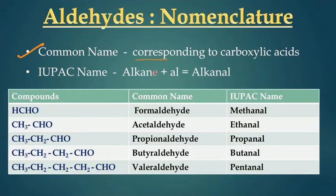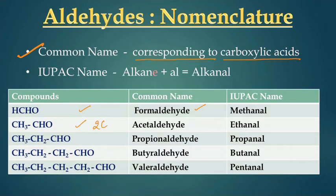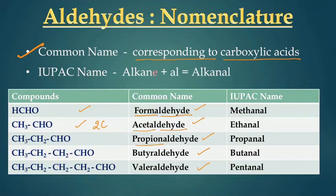Now for the common nomenclature system: the common names of aldehydes are written according to their corresponding carboxylic acids. The first compound is formaldehyde, the two-carbon compound CH₃CHO is acetaldehyde, three carbons gives propionaldehyde, four carbons gives butyraldehyde, and five carbons gives valeraldehyde. These names are derived from formic acid, acetic acid, propionic acid, butyric acid, and valeric acid respectively.